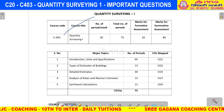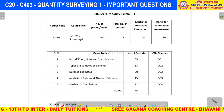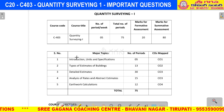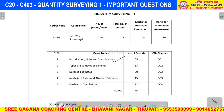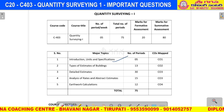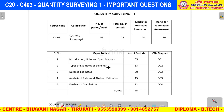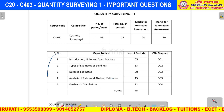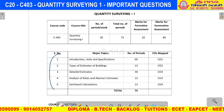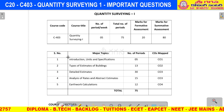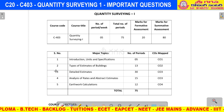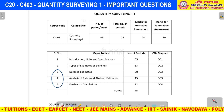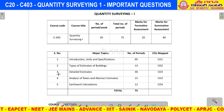Quantity Surveying 1 is a very very important subject and also a very easy subject. There are five units in total with a very limited syllabus. If you focus on units 3, 4, and 5, you can gain around 40 to 45 marks and easily pass the exam. Even for the full 60 marks, these three units are sufficient.